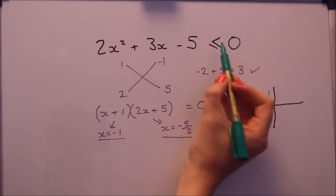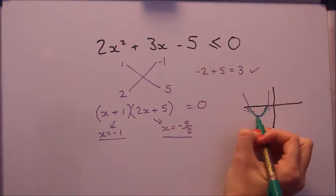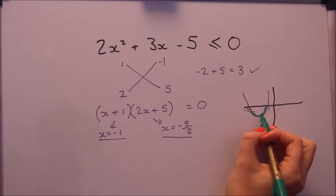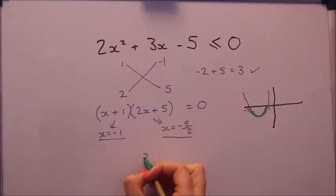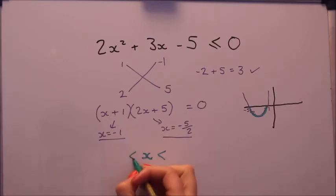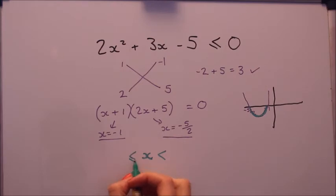Now this time it's less than zero, so it's going to be below the axis. And that diagram shows me it's x is between minus 5 or 2 and minus 1. So that inequality can be written the other way. And by the way, when it's this option and it's just one inequality, those signs always go that way round. I can use the equals part of the inequality as well on this one. And that's the answer to that inequality.